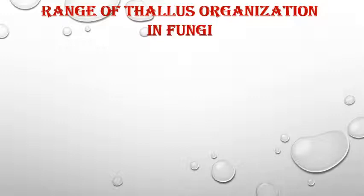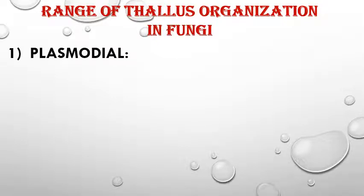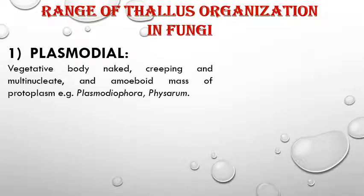The first type of thallus is plasmodial thallus. It is a naked mass of protoplasm — a vegetative body without any covering, meaning it lacks a cell wall. It is multinucleate, containing multiple nuclei within an amoeboid mass of protoplasm.